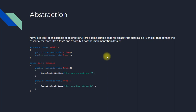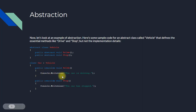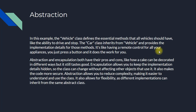Now let's look at an example of abstraction. Here's some sample code for an abstract class called Vehicle that defines the essential methods like Drive and Stop, but not the implementation details. The abstract class has: public abstract void Drive, and public abstract void Stop. Then the class Car inherits from abstract Vehicle and implements the way the Drive method and Stop method should work on that device. In this example, the Vehicle class defines the essential methods that all vehicles should have, like the ability to drive and stop. The Car class inherits from Vehicle and provides the implementation details for those methods. It's like having a remote control for all your appliances — you just press a button and it does the work for you.